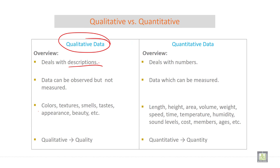Qualitative data — derived from quality — can be observed but not measured. Examples include color, texture, smell, taste, appearance, etc.